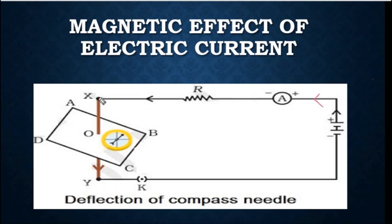If we have a wire and we have a needle, then we need to see that the needle will deflect. So we need to see that the magnetic field is generated. This is the compass that we use. That is how the magnetic field is generated, and we need to see the direction of the magnetic field.